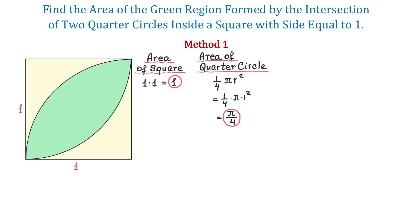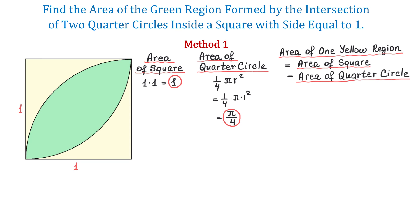If we subtract the area of this quarter circle from the square, then we will get the area of this yellow part. The area of one yellow region equals the area of the square minus the area of a quarter circle, which equals 1 minus π over 4.